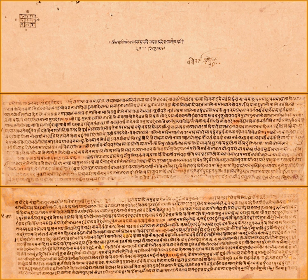Nirukta, states Monier-Williams, means 'uttered,' 'pronounced,' 'explained,' 'expressed,' 'defined,' 'loud.' It also refers to the etymological interpretation of a word, and also the name of such works. The related Sanskrit noun Nirukti means 'poetical derivation' or 'explanation of a word.'